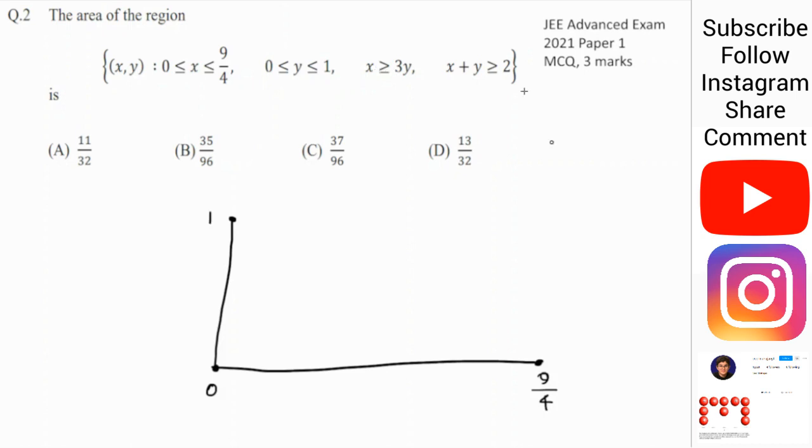Then we've got x is greater than or equal to 3y. So that's the same thing as this. Which would look... So if you want to find what it looks like, it will have a slope of 1 third and it will go here. So when x is 9 fourths, y will be 3 fourths. So it will go like this.